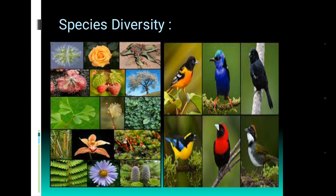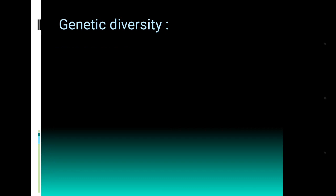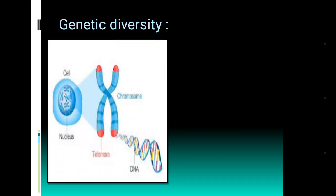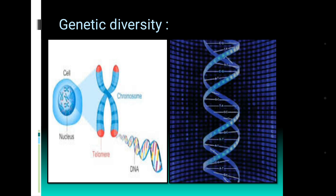So the variation or the diversity we see among the same species is called species diversity. The second one is genetic diversity, which originates from chromosomal differences. Each characteristic of a living organism is determined by the DNA or genetic sequence, genetic coding. Whenever a new offspring arises, genetic variation occurs, producing variation among the same species. This is called genetic diversity.